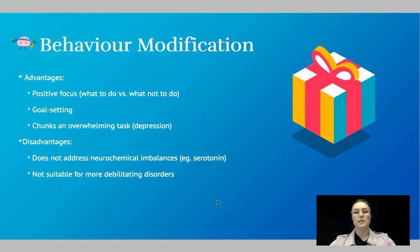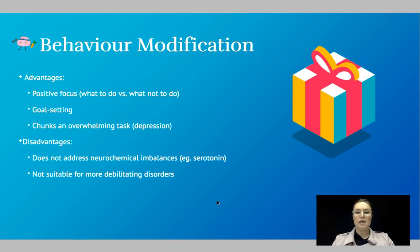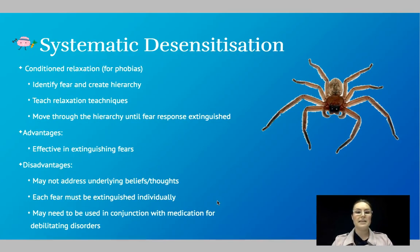Reduce those rewards over time. An advantage of behavior modification is that it has a positive focus and involves goal setting, which is a helpful strategy for mental illness. It also chunks what might otherwise be an overwhelming task into small pieces. Disadvantages: it doesn't address neurochemical imbalances and it's not really suitable for extreme cases. While it is a behavior therapy, it might be more suited to a cognitive behavior therapy approach.